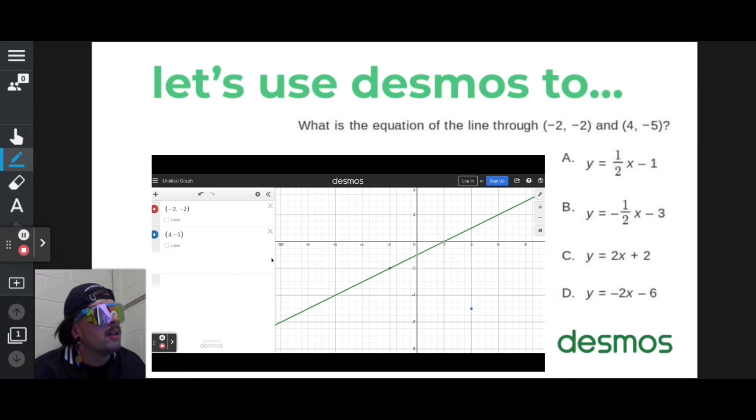B is awfully close. So I'm just going to type that out. y equals negative 1 slash 2, move over before I type out my x, minus 3. And as you can see, that line goes through both of my points. So the answer in this case is B.